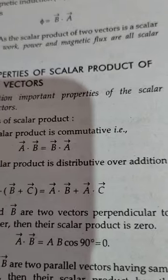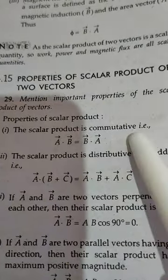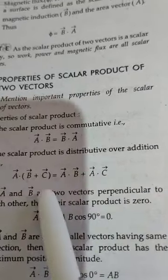There are some properties of the scalar product. Property number one: the scalar product is commutative, that is, A·B = B·A. The scalar product is also distributive over addition.